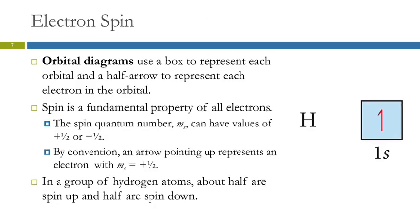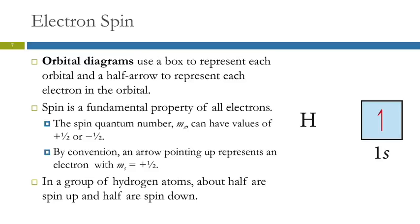Spin is a fundamental property of electrons. It's convenient to think of them as spinning clockwise or counterclockwise like a top. The spin quantum number m_s has two possible values: plus one-half or minus one-half. We can also represent electrons in orbitals using orbital diagrams — a picture method. The orbital diagram for hydrogen has one box representing the 1s orbital, with electrons shown as half-headed arrows: arrow pointing up is plus one-half, pointing down is minus one-half. About half of hydrogen atoms are spin positive and half are spin negative.